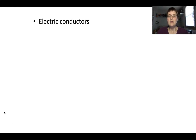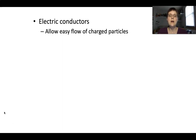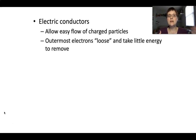A little bit about electric conductors and insulators. Electric conductors are any materials that allow the easy flow of charged particles — in this case, electrons, though other charged particles like hydrogen ions, which are just individual protons, can also move. Electrical conductors are materials whose outermost electrons are loose and take very little energy to remove, so they're easy to bump off and move around.